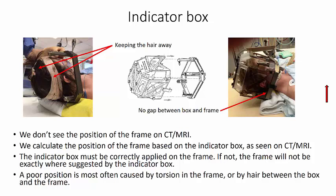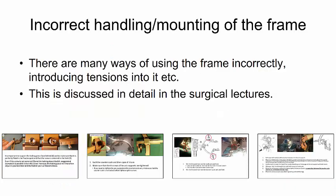We do not see the position of the frame on CT or MRI. We calculate the position of the frame based on the indicator box, and the indicator box must be correctly applied on the frame. If not, the frame will not be exactly where suggested by the indicator box, and the poor position is most often caused by torsion in the frame or by hair between the box and the frame. There are, of course, numerous ways to incorrectly handle the frame, and this is discussed in detail in the surgical lectures.